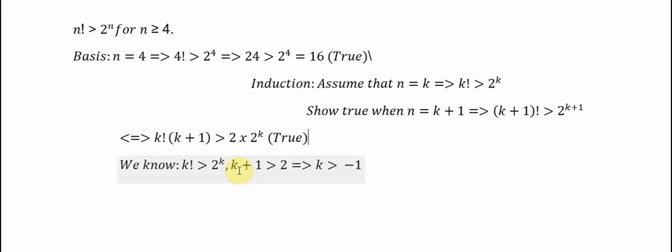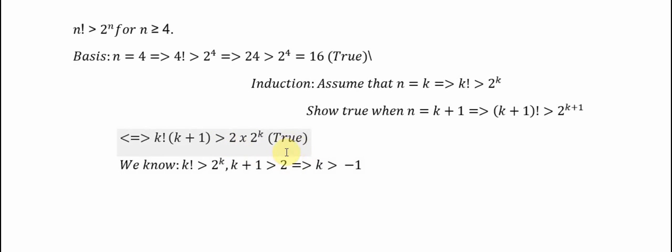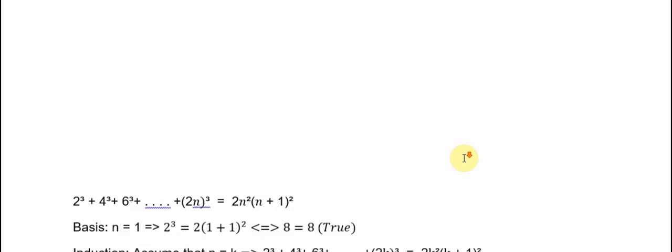k and k plus 1 are both greater than 2, so two things multiplied together are greater than two things multiplied together — and that shows it is true.